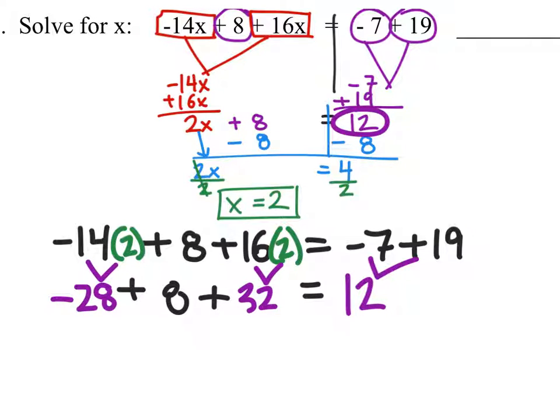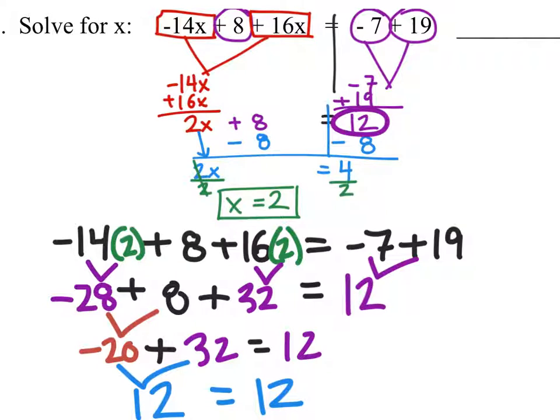Next up, we simply combine the terms from left to right. Negative 28 plus 8 is negative 20. Now plus 32 equals 12. And I'll combine negative 20 plus 32. That would give me 12 equals 12.